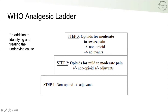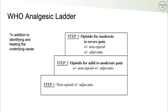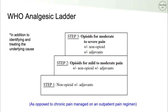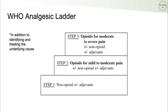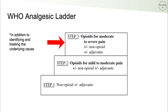The WHO has an analgesic ladder used for pain control. Controlling a patient's pain is part of a comprehensive plan to identify and treat the underlying cause. The WHO analgesic ladder has three steps: step one is to start with non-opioid pain control; step two is to add opioids for mild to moderate pain, often in conjunction with non-opioids; and step three is to escalate opioids for moderate to severe pain.